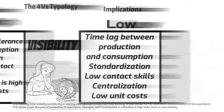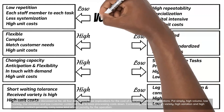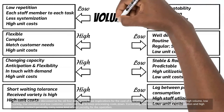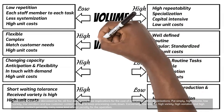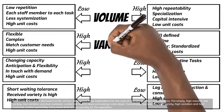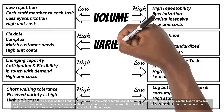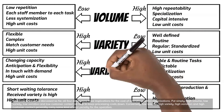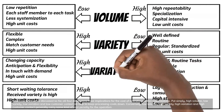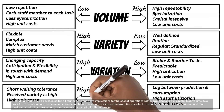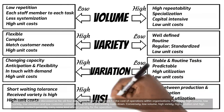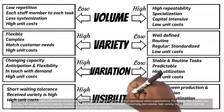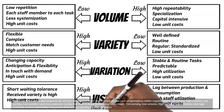Based on what we've discussed so far, all four dimensions have implications for the cost of operations within organizations. Simply put, high volume, low variety, low variation, and low customer contact all help to keep processing costs down. Conversely, low volume, high variety, high variation, and high customer contact generally carry some kind of cost penalty for the operation.